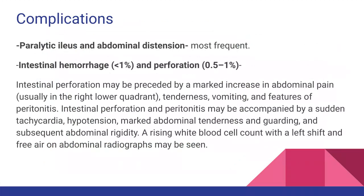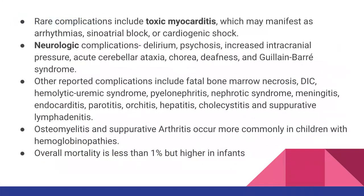The most frequent complications are gastrointestinal. The most common GI complication is paralytic ileus and abdominal distension. More severe GI complications include intestinal hemorrhage and perforation. Intestinal perforation is preceded by marked increase in abdominal pain, tenderness, vomiting, sudden tachycardia, hypotension, guarding and rigidity, leukocytosis, and free air on abdominal X-ray. Systemic rare complications include toxic myocarditis and neurological complications, though GI hemorrhage is rare in children.